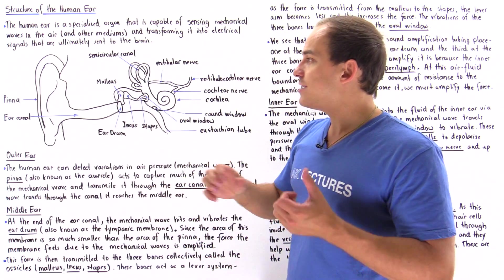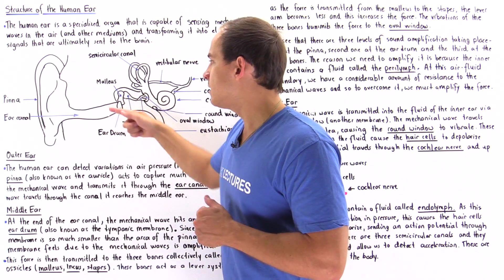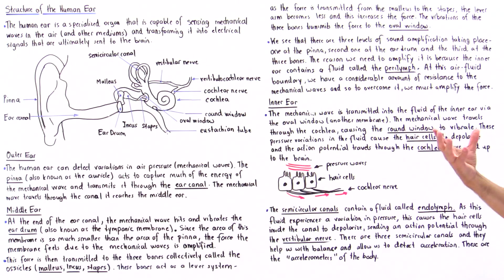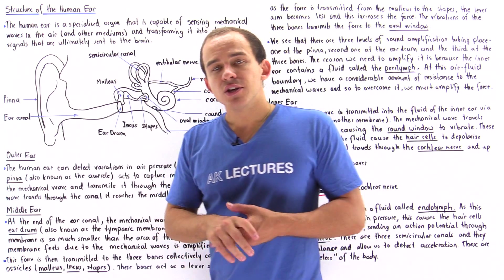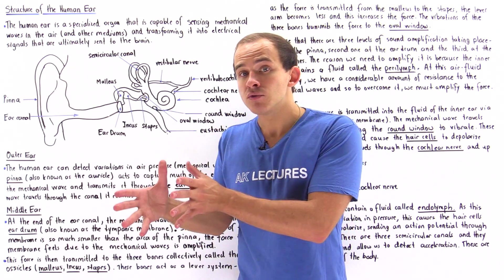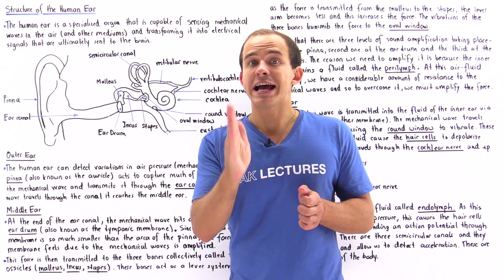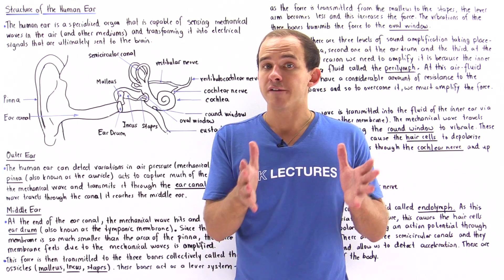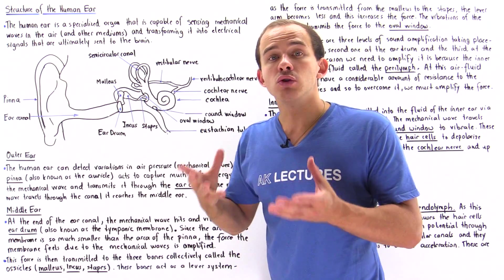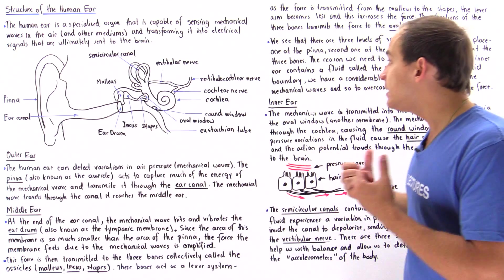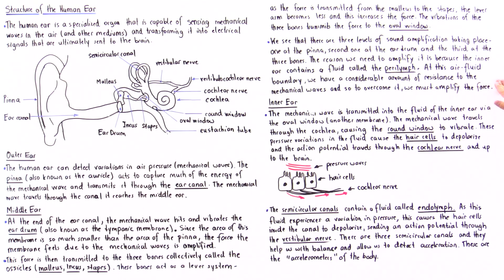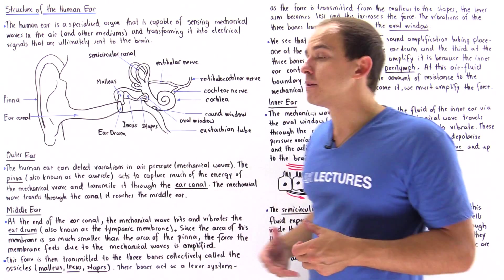We have amplification taking place at the pinna, at the eardrum, and at the three ossicles. But why do we want this amplification in the first place? Recall from physics that whenever a mechanical wave propagating through air hits a liquid boundary, there is a good amount of resistance at that boundary. To transmit our mechanical wave from air into liquid, we have to amplify our force. Inside the inner portion of the ear, we no longer have air — we have a liquid known as the perilymph — and at this air-fluid boundary, we need to overcome considerable resistance.